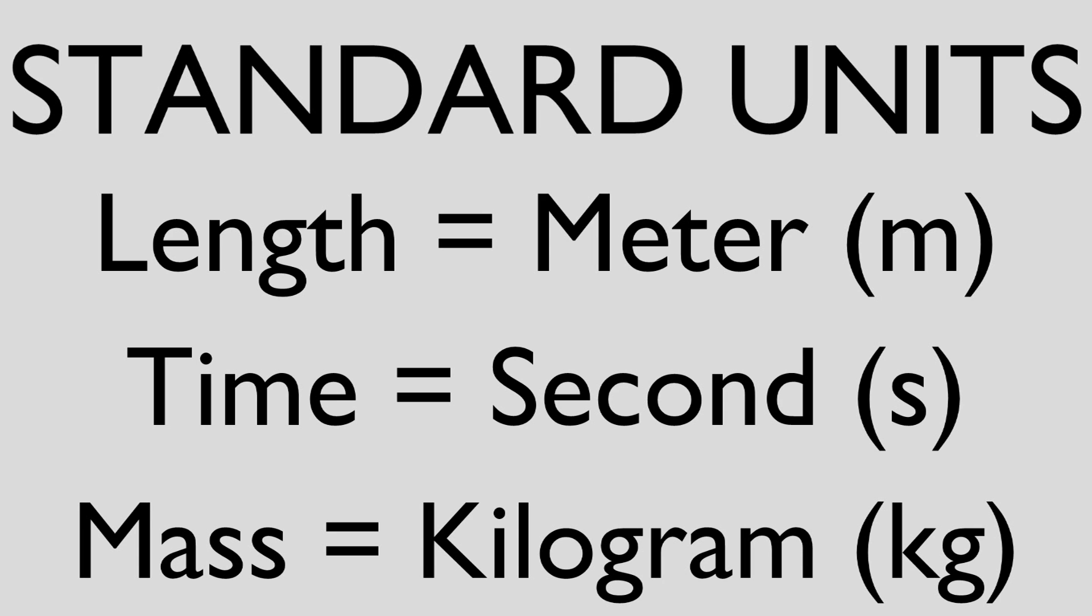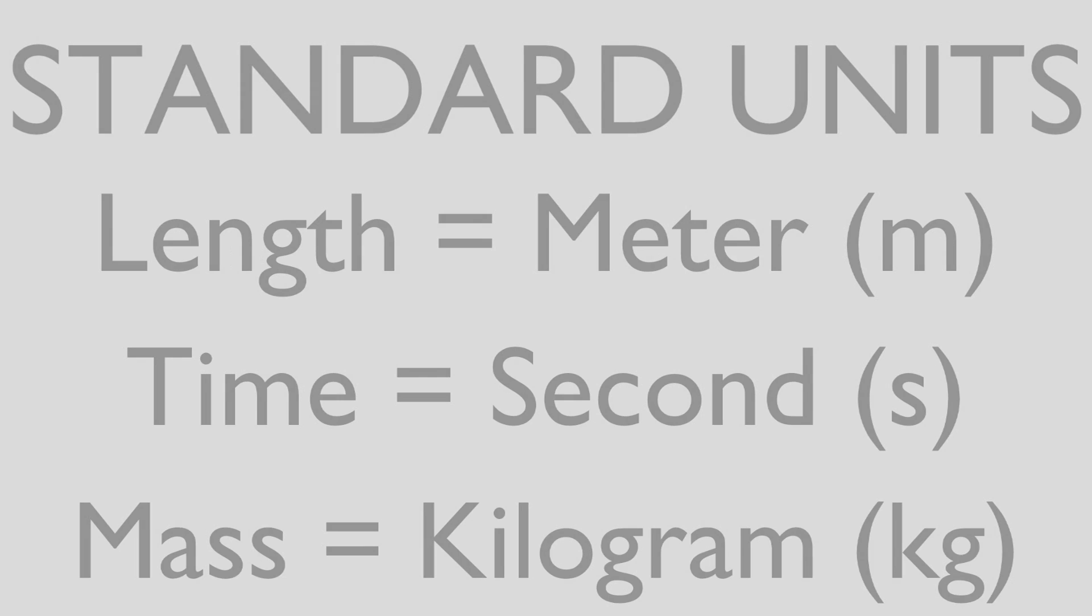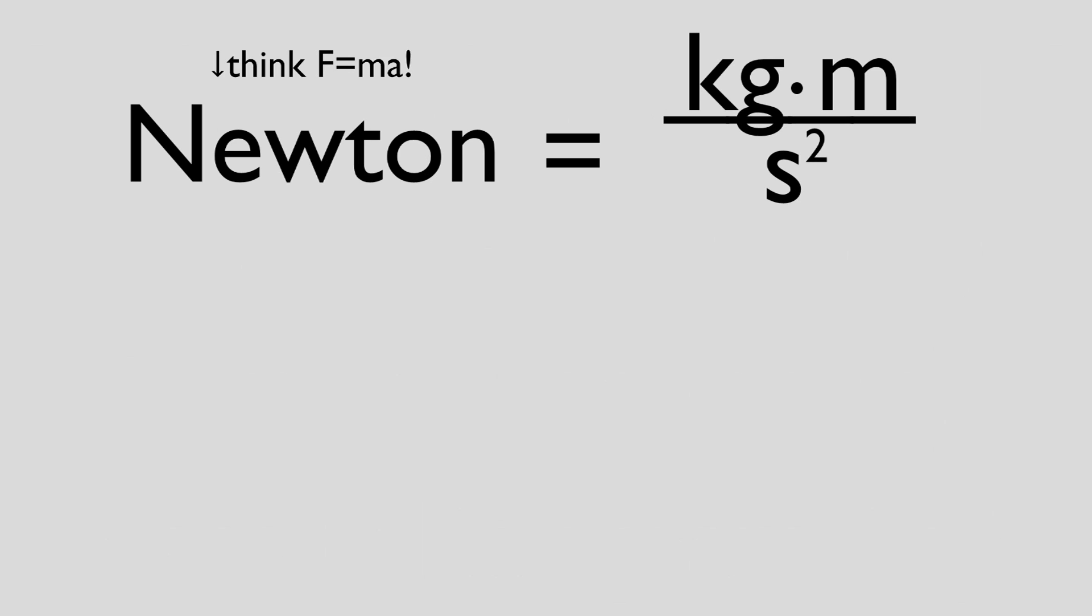In physics, we usually like to work only in standard units, mostly because derived units, such as a newton, are a composition of standard units. If you multiplied a mass in grams and an acceleration in centimeters per second squared, you would not get kilograms per meter per second squared. Thus, it would not be a newton.